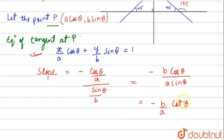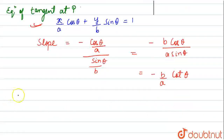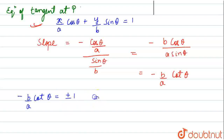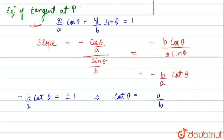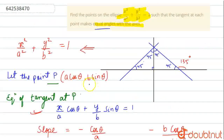This slope equals either tan 45° = 1 or tan 135° = −1, so: −b cosθ / (a sinθ) = ±1. This gives cosθ / sinθ = ±a/b, which we can write as |cosθ| / |sinθ| = |a|/|b|, meaning cosθ = ±a/b · sinθ. We note the point P is (a cosθ, b sinθ).